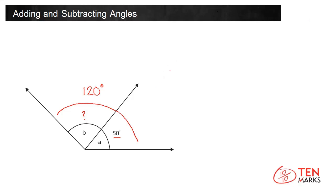Let's write an equation. 50 degrees plus what equals 120 degrees. To do so, you need to subtract. 120 degrees minus 50 degrees equals 70 degrees. Angle B measures 70 degrees.